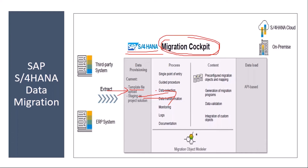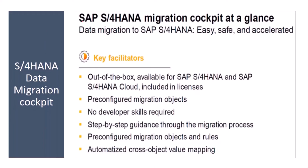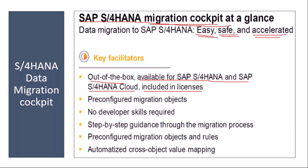You extract the data from the legacy system, put it in a file, and then upload it — that's what you will do, and we will see it in the system today. The key features of the SAP S/4HANA migration cockpit are that it is easy to use, safe, and accelerated. It is available out of the box for SAP S/4HANA and S/4HANA Cloud, including licenses, and it contains pre-configured migration objects for all master data and transactional data objects across all modules.